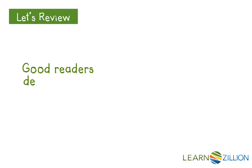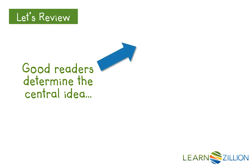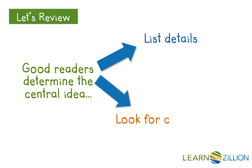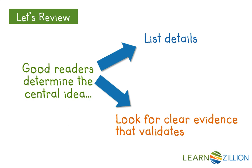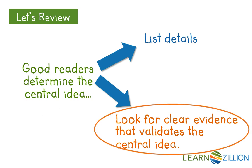Good readers determine the essential idea — what is the text mostly about? But after we do that, we have a couple of choices. We can just list the details that support the central idea, but what good readers do is look for clear evidence that validates the essential idea. When I say validate, I mean that backs it up, that makes it grow bigger and stronger. Today we're going to focus on looking for clear evidence that really enforces and strengthens our essential idea.